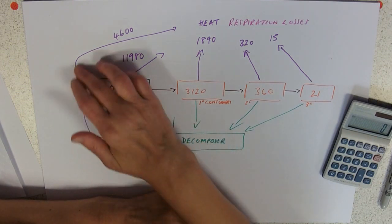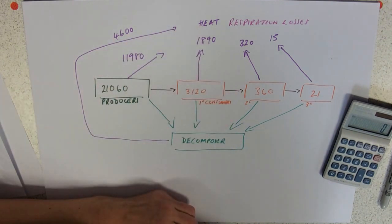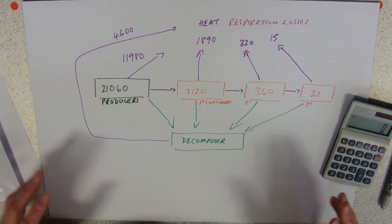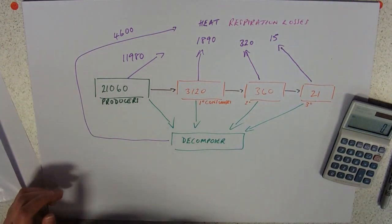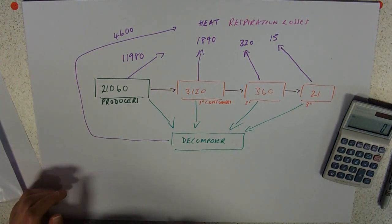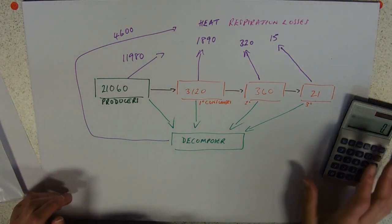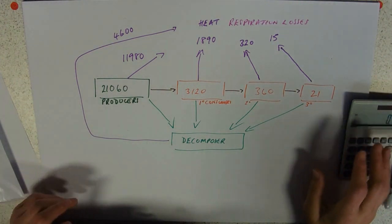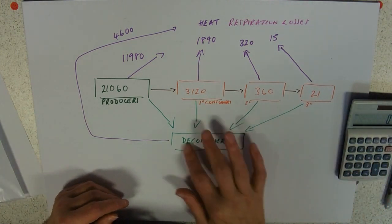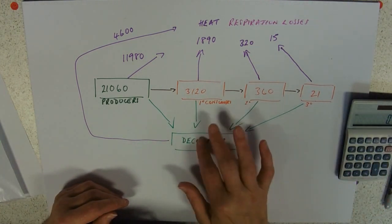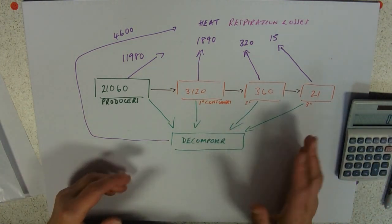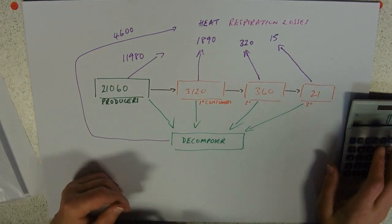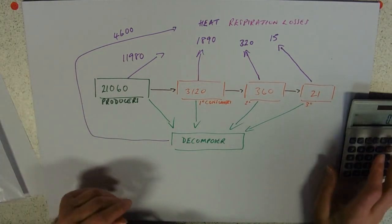The decomposers are utilizing the dead organisms to fuel their own respiration, and therefore they have a respiratory loss as well. You might be given a total here of the energy that's gone the other way, or you might have to work it out.